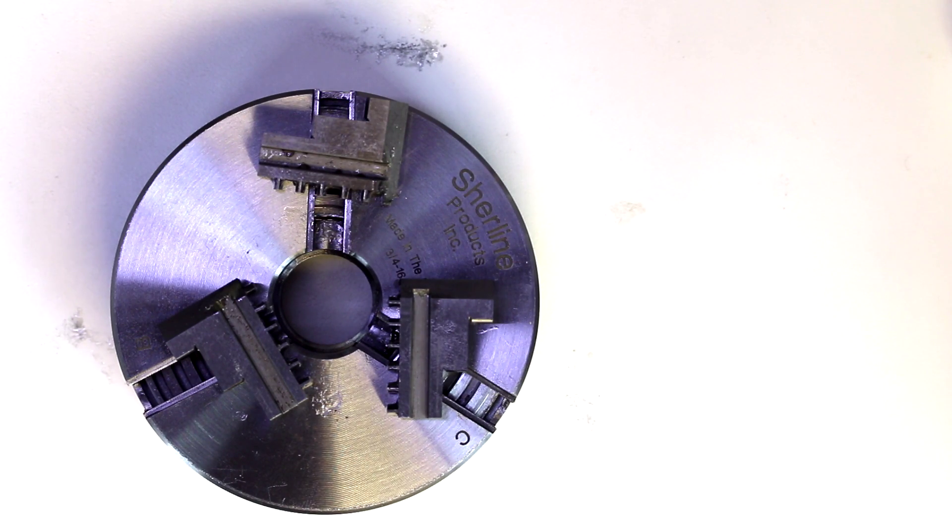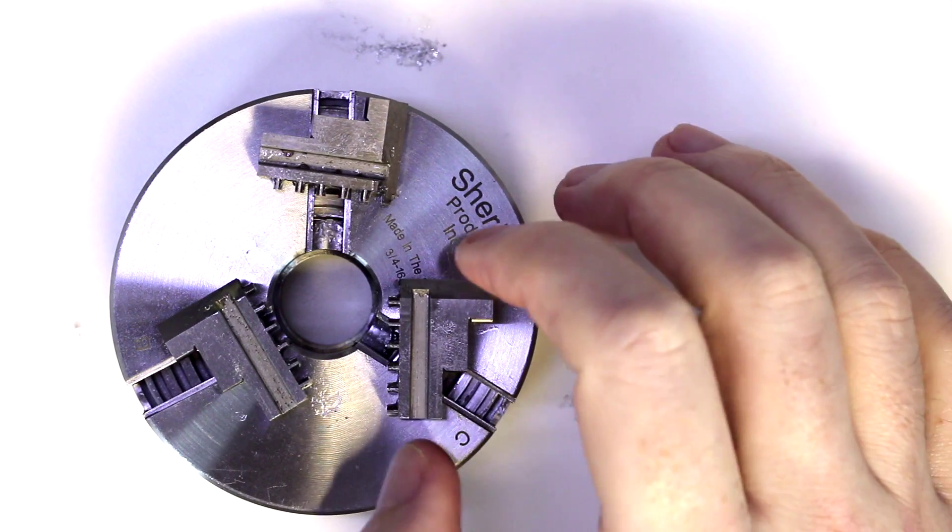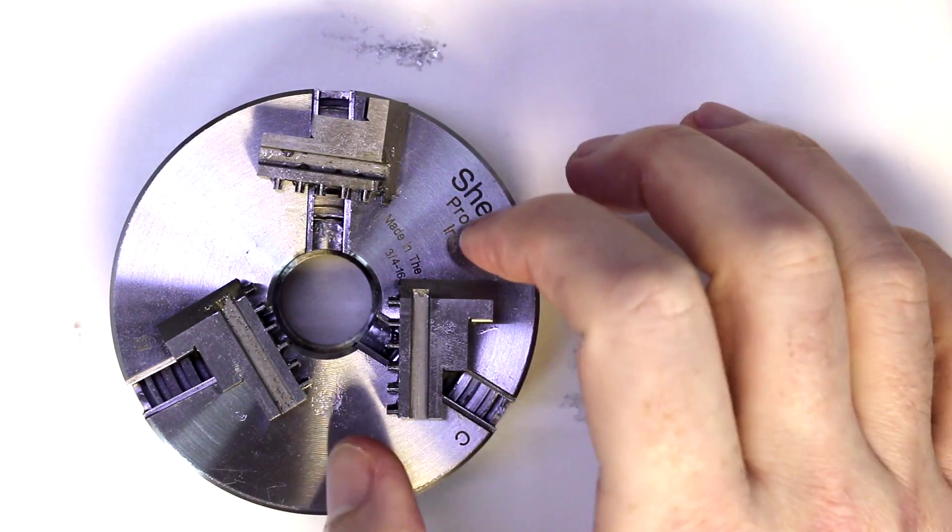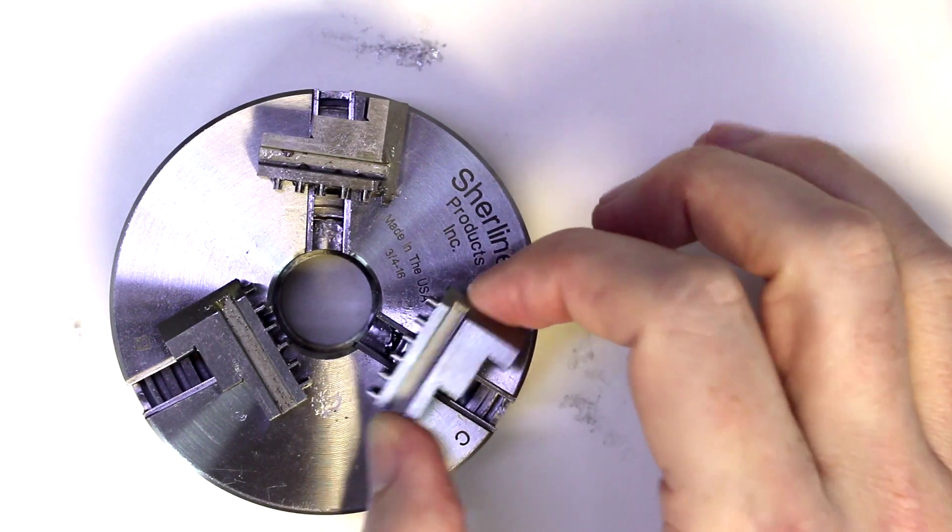Now putting these back together can be a little bit tricky in that getting all these to engage properly and to center properly. One other item you can do with these is, depending on the model of the three-jaw, it may have a separate set of internal and external chucks, or it may allow you to simply reverse the existing set.